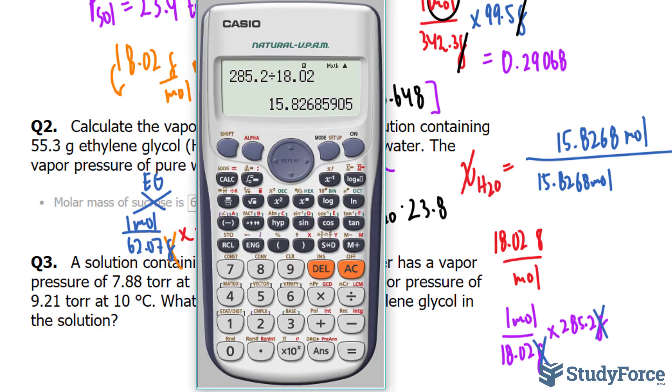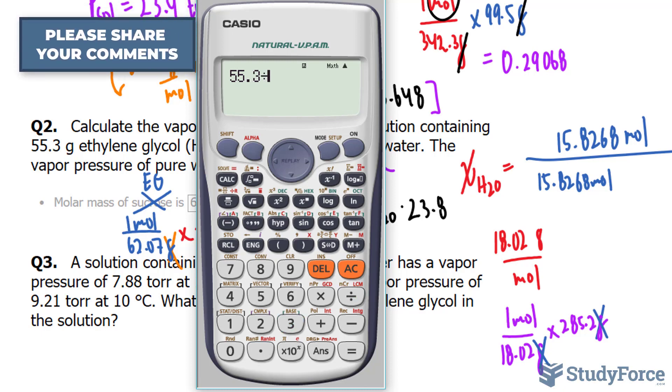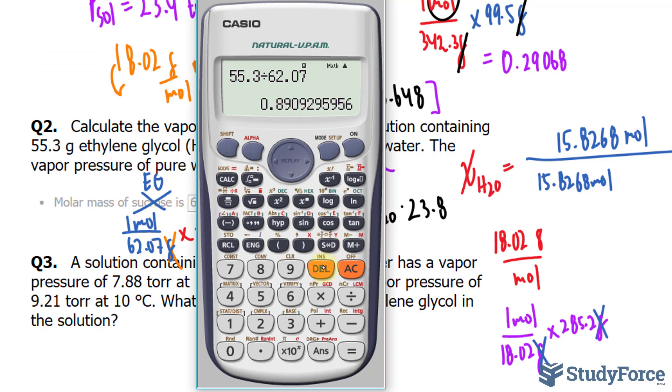This unit and this unit cancel out. Let's use our calculator, 55.3 divided by 62.07, giving us 0.809. I'll add this to this number, the one that I'm hovering over, plus 15.8268.